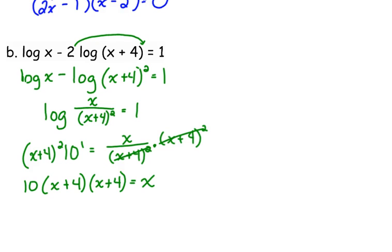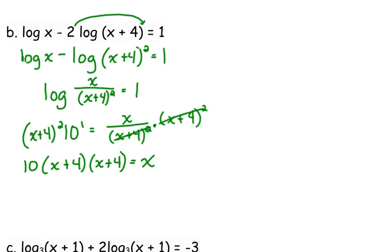Now we've got to FOIL. x plus 4 times x plus 4 is x squared plus 8x plus 16.